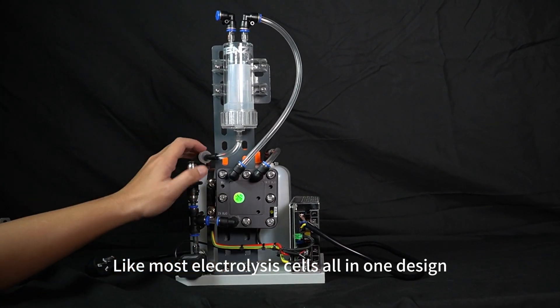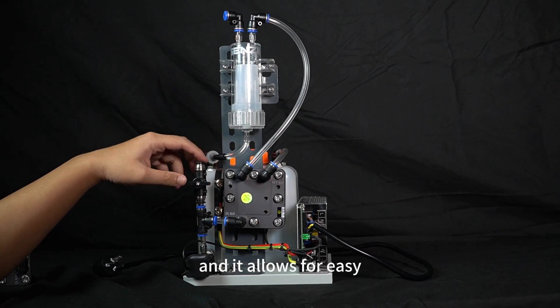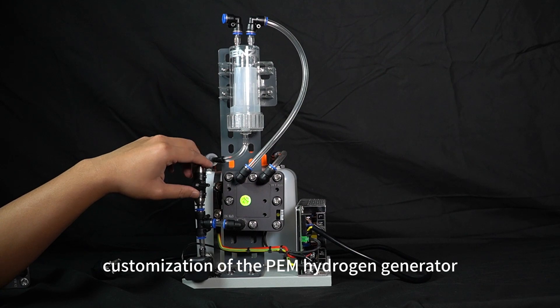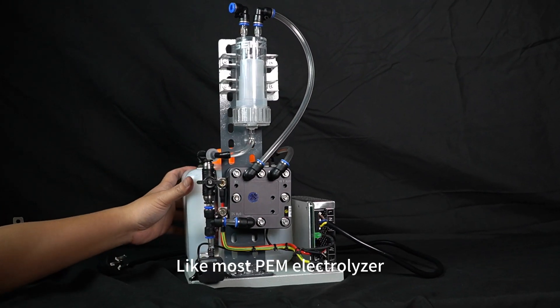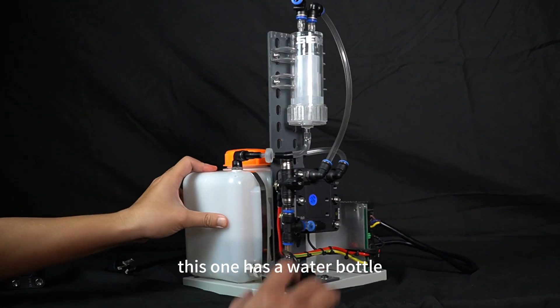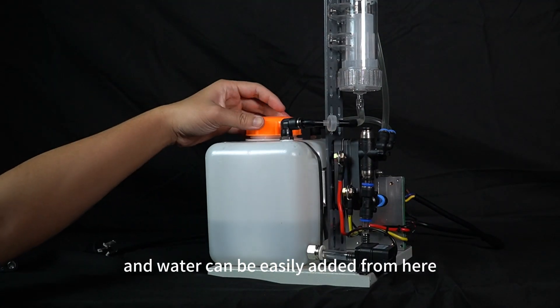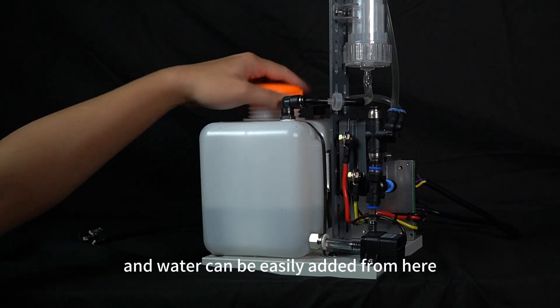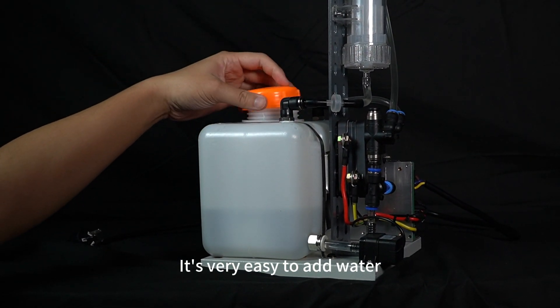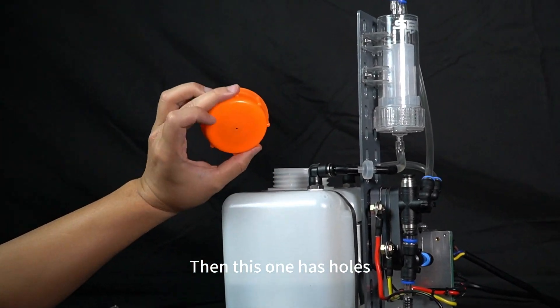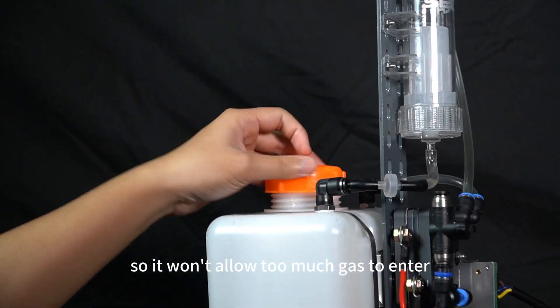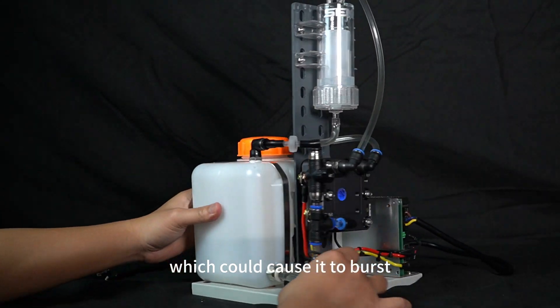Like most electrolysis cells, it's an all-in-one design and allows for easy customization of the PEM hydrogen generator. This one has a water bottle, and water can be easily added from here. It's very easy to add water. This one has holes, so it won't allow too much gas to enter, which could cause it to burst.